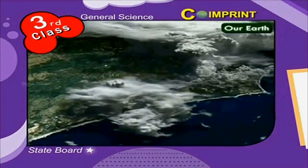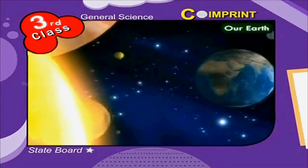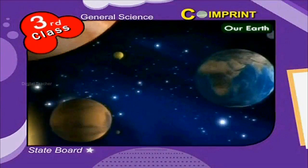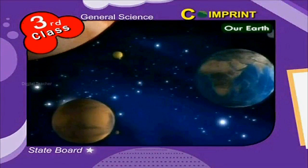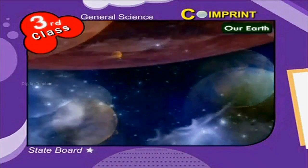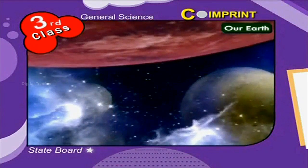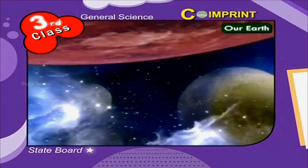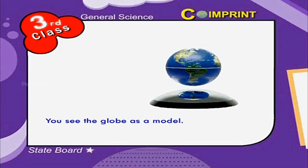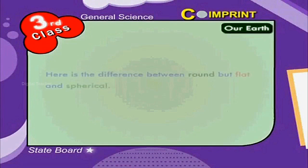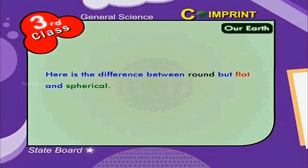The Earth is one of the nine planets in the solar system. It is round like a ball, say spherical in shape. You see the globe as a model. Here is the difference between round but flat and spherical.